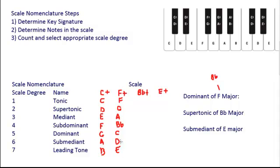So our last step is to count and determine the appropriate scale degree. So since we're looking for the dominant, which is the fifth, we count down to the fifth note, and we figure out that is a C. So the dominant of F major is a C.